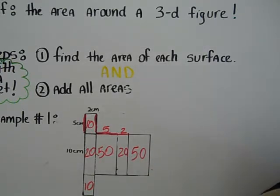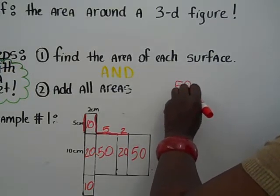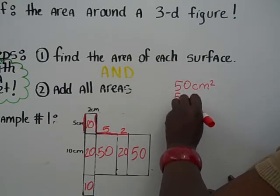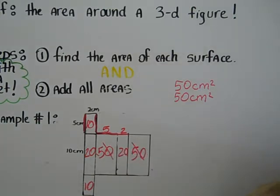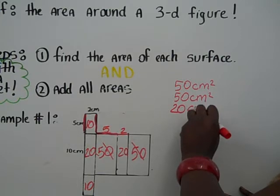Step two is to add all those areas up. So we have a 50 centimeters squared and another 50 centimeters squared. Those two, cancel those out. Next, I'm going to go to my two 20s, 20 centimeters squared.